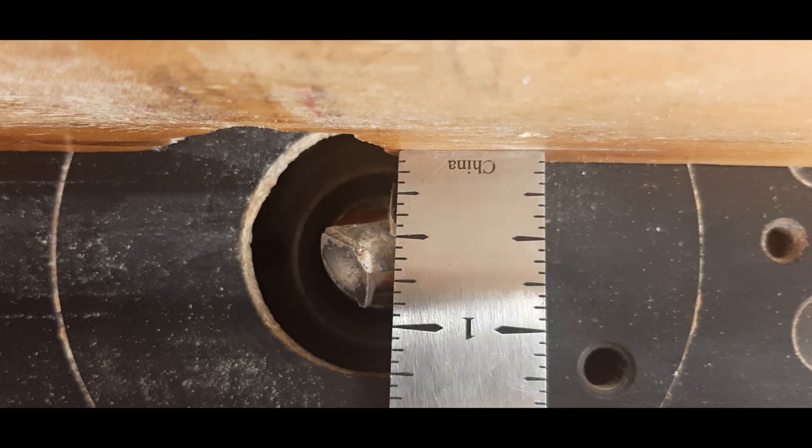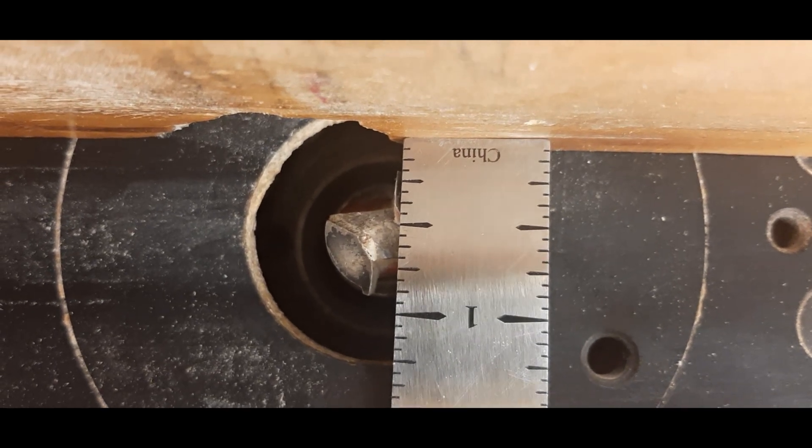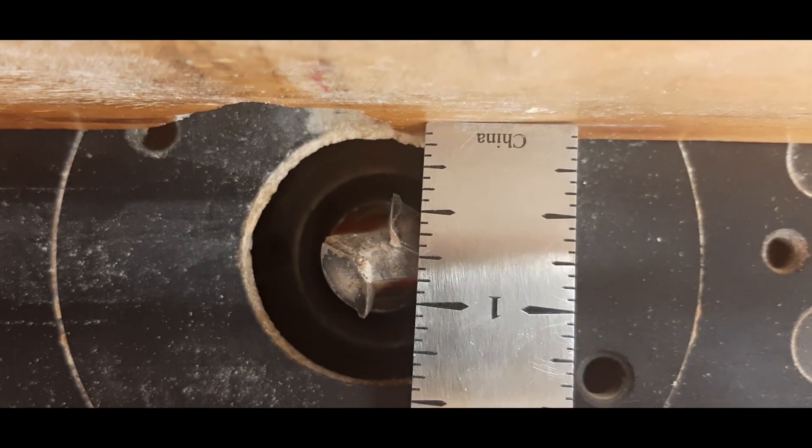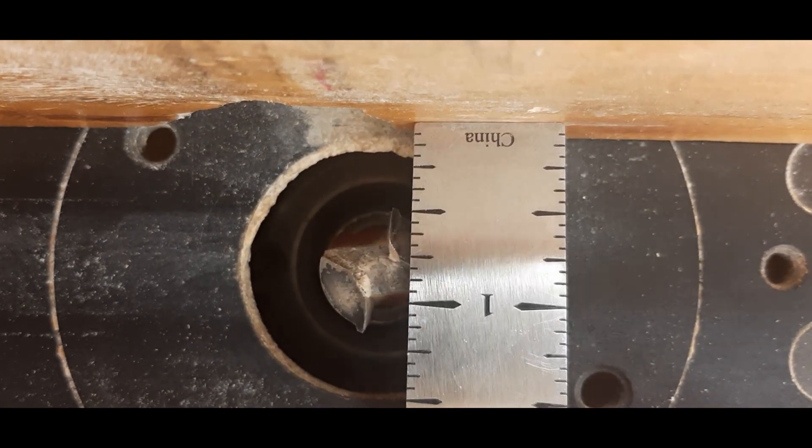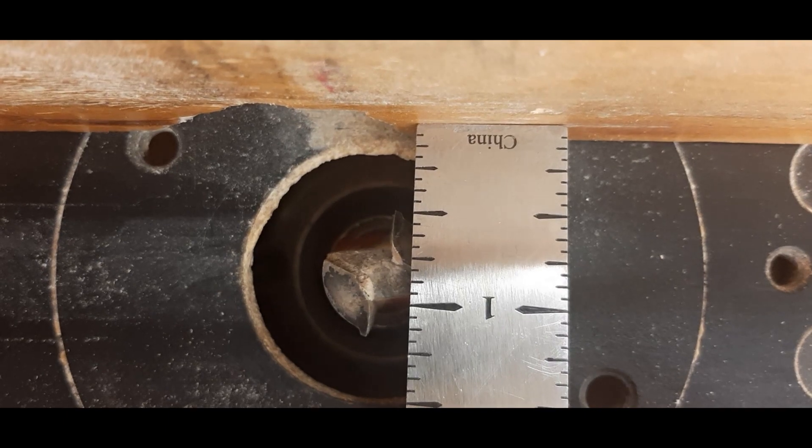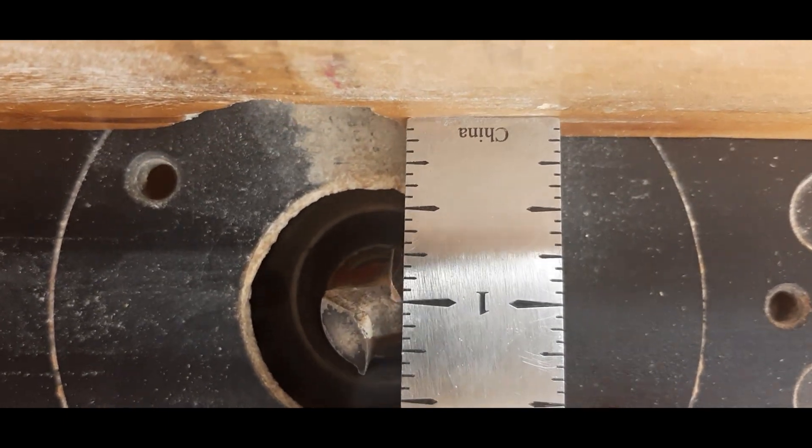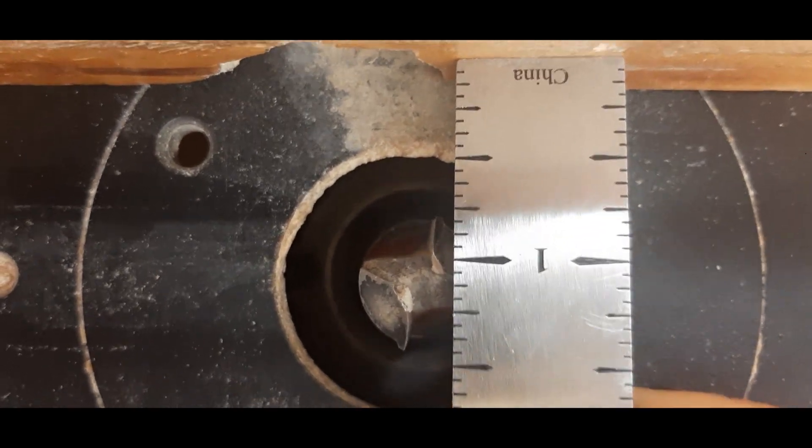Right now it's three sixteenths. We want three quarters of an inch. So I'm just going to shove the fence back. This will cut a slot that's half inch from the edge, but I want three quarters.